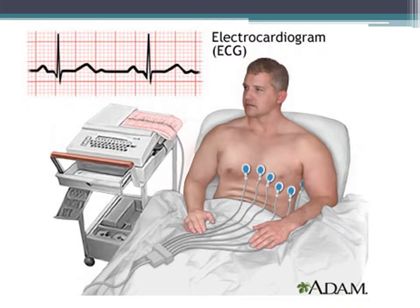A 12-lead EKG is a relatively simple test in which electrodes are placed across your chest and the electrical impulses from your heart are recorded. This will allow us to determine the strength of your heart, as well as if there's been previous damage based on your lung disease or coronary disease.